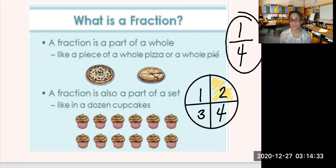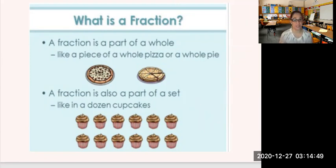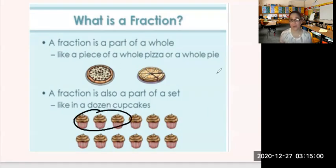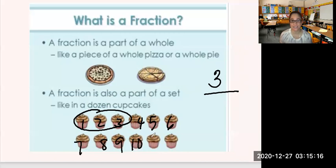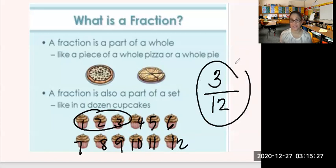Why is it one-fourth? Because there is only one yellow part that I shaded — I put that on top of the fraction. The number four goes at the bottom because there are four equal parts. A fraction is also a part of a set, like in a dozen cupcakes — a dozen means 12. Let's say we ate three pieces of that cupcake — I put the number 3 on top. How many cupcakes all in all? One, two, three, four, five, six, seven, eight, nine, ten, eleven, twelve — I have 12 cupcakes all in all. So the fraction of those three cupcakes out of a dozen is 3/12.